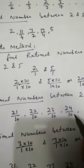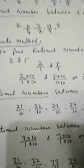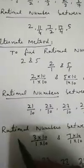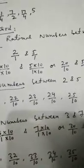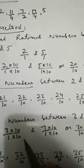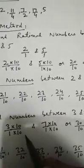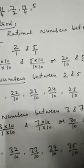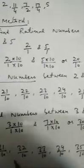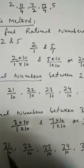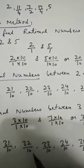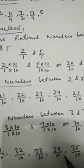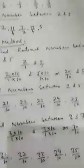Similarly, we can find rational numbers between 3 and 7. They can be changed to 30 by 10 and 70 by 10. Numbers between 30 by 10 and 70 by 10 are 31 by 10, 32 by 10, 33 by 10, 34 by 10, and 35 by 10. So clear, students?